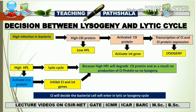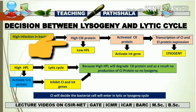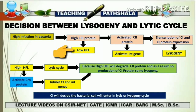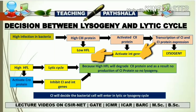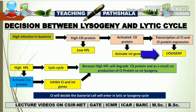This flowchart shows how the decision between lysogenic and lytic cycles takes place. When there is high infection of a bacterium, there is high C3 protein in the lambda phage. High C3 inhibits HFL expression, resulting in low HFL protein production. Additionally, high C3 activates the C2 protein. This C2 protein activates the INT gene and helps in transcription of the C1 gene, producing C1 protein. C1 protein then enhances the lysogenic cycle. So C2, C1, and INT gene together play a very important role in promoting lysogeny.